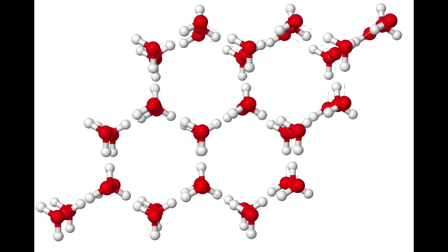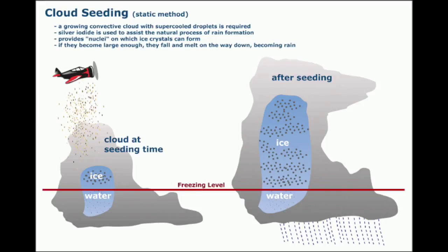Two different types of seeding agents are used depending on the temperature of the cloud volume to be treated. The cold rain process uses ice particles, whereas the warm rain process is entirely liquid. There are three methods of cloud seeding. Static, where the moisture is already present in the clouds, but chemicals like silver iodide provide crystals for the water to condense around and make the clouds more effective at dispensing their water.